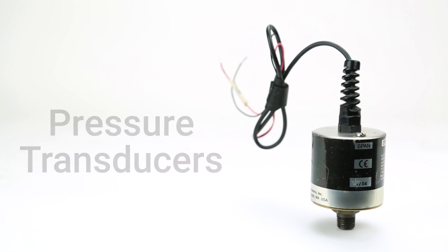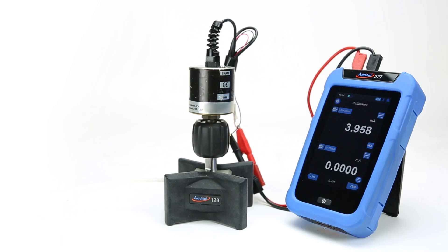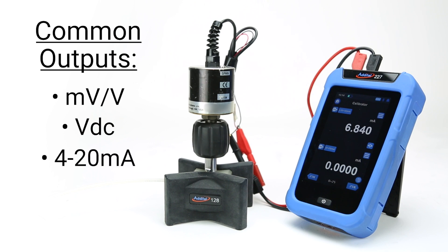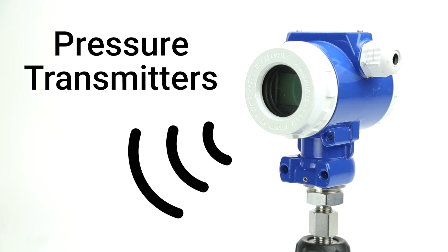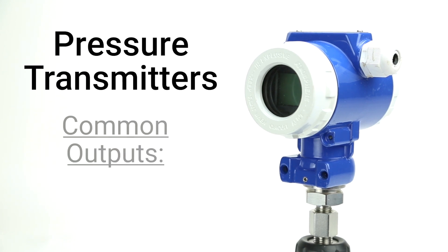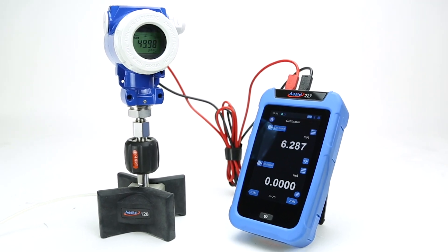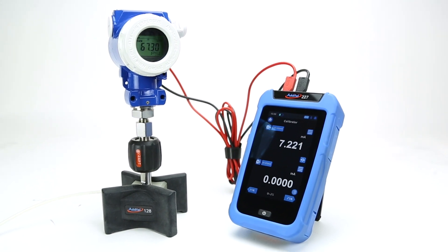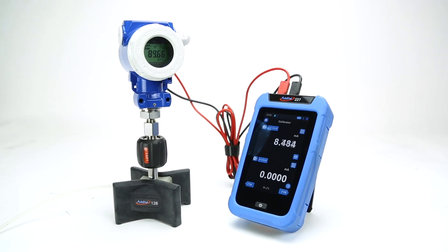Similar to modules, pressure transducers convert a pressure reading into an electrical signal, but unlike modules, the output can be measured and recorded by most types of electrical readouts. This electrical signal will typically be in millivolts per volt and will require a physical connection. Pressure transmitters are almost identical to transducers, but they also amplify and send their signals to a receiver, most commonly in the form of volts or a 4 to 20 milliamp signal. In general, transmitters are preferred when sending a signal over longer distances, due to being the least affected by electrical noise and resistance found in signal wires.